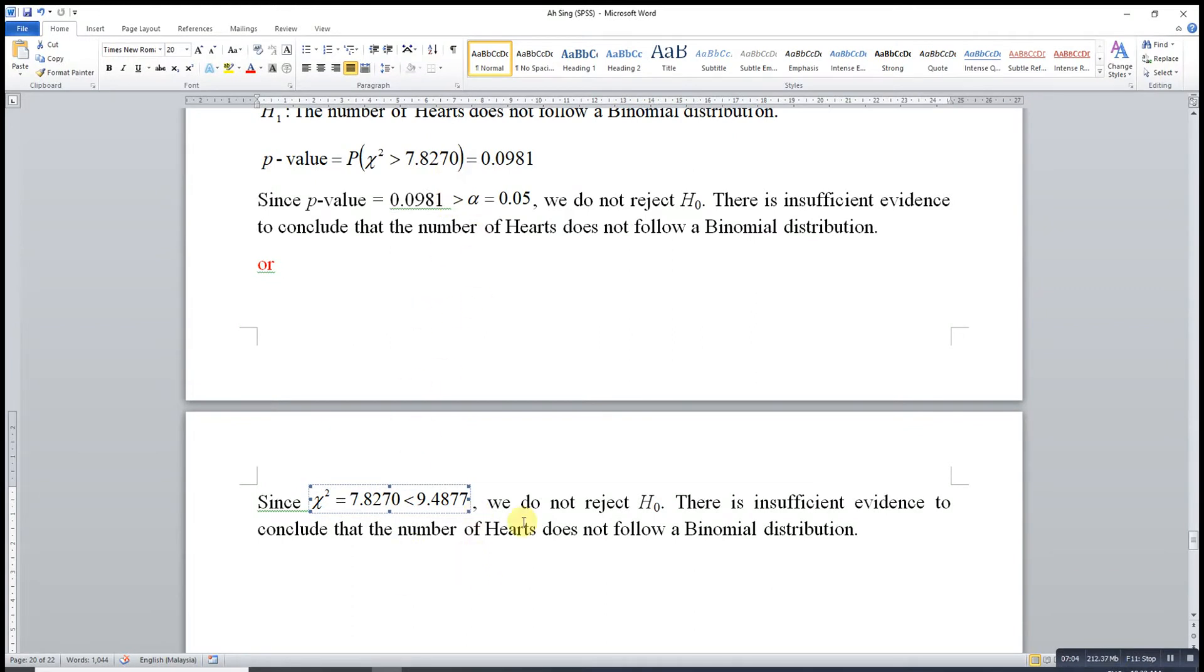With either method we will come to the same conclusion. Since the test statistic is less than the critical value, we do not reject H0 as well and conclude that there is insufficient evidence to conclude that the number of hearts does not follow a binomial distribution.